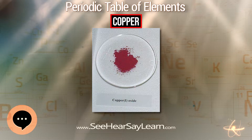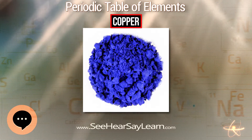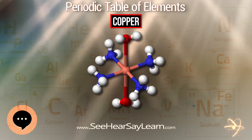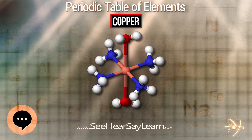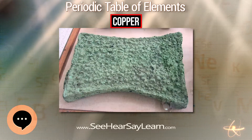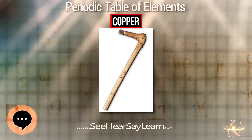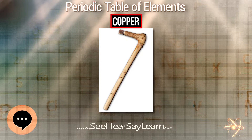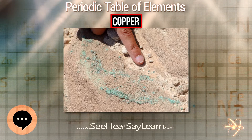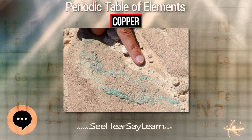Copper is produced in massive stars and is present in the Earth's crust in a proportion of about 50 parts per million. In nature, copper occurs in a variety of minerals, including native copper; copper sulfides such as chalcopyrite, bornite, digenite, covellite, and chalcocite; copper sulfosalts such as tetrahedrite and tennantite; and copper carbonates such as azurite and malachite, as well as copper oxides such as cuprite and tenorite.